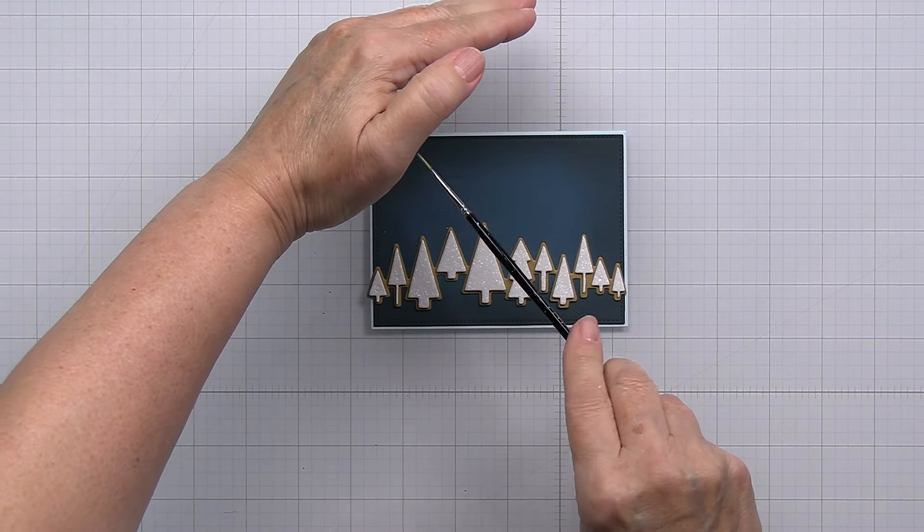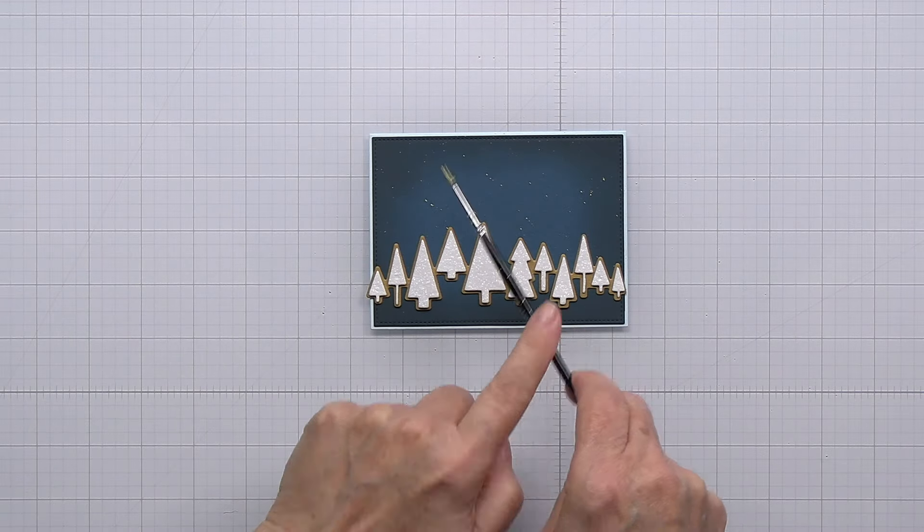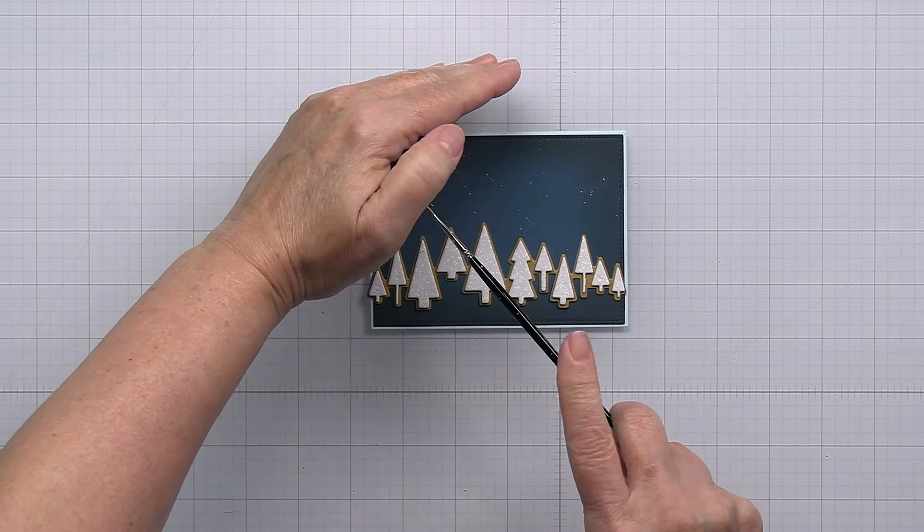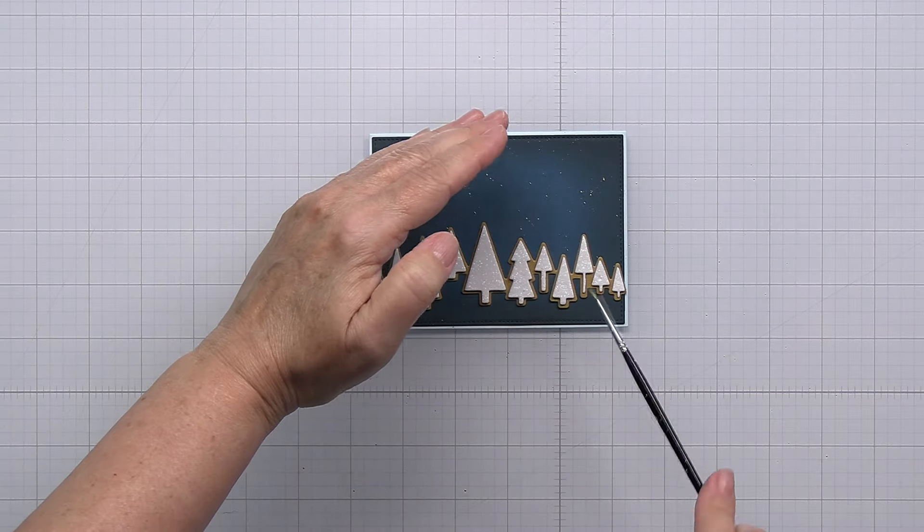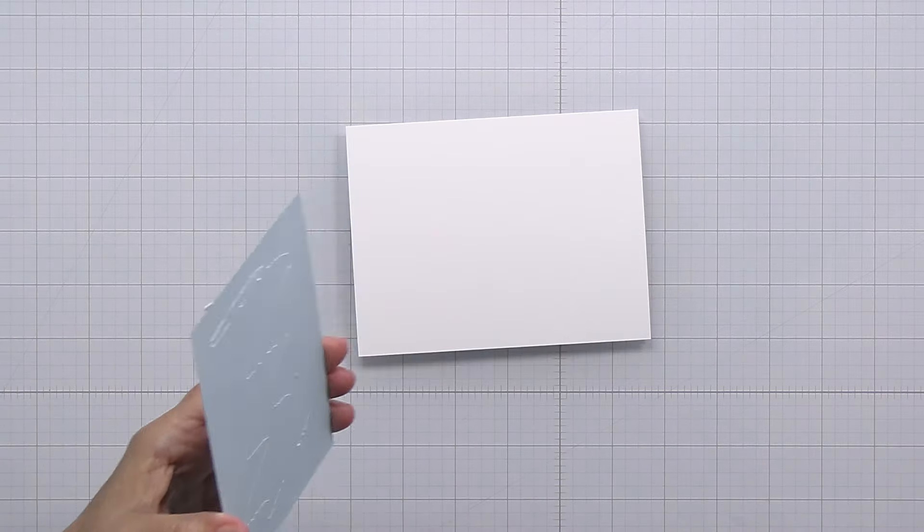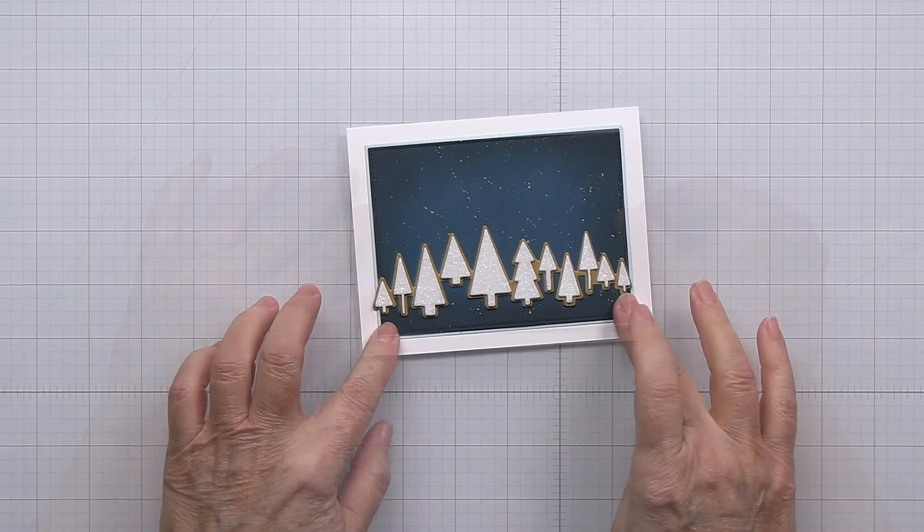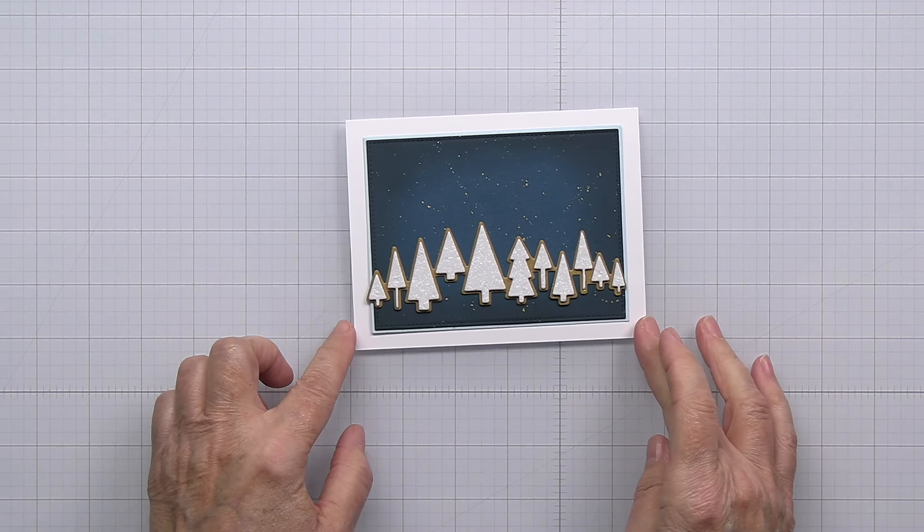I'm going to add some gold splatters this is the Yasutomo gold splatter watercolor and this is from Spellbinders so I'm just going to add that on then I'm going to go ahead and add my card front onto a white card base this is an A2 size white landscape top folding card base.